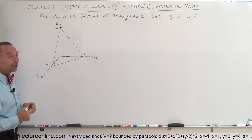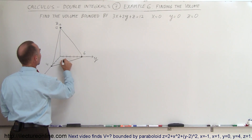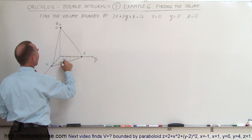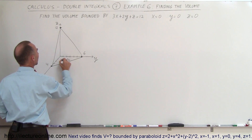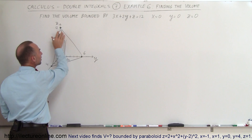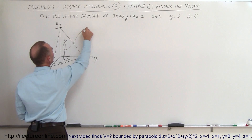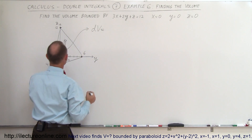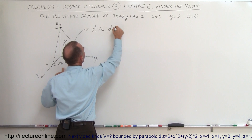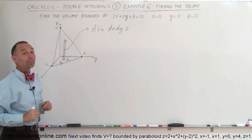How do we find the volume of that? The first thing you want to do is find a small dv element, and we can do that by drawing a small dx dy base. So this would be a dy by dx, and then we make that into a rectangular-shaped object until we reach the plane. So this is going to be our dv, and the dv can be defined by the base dx dy, and the height is going to be defined by the variable z when it reaches that plane.